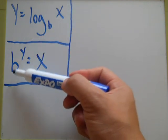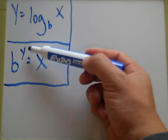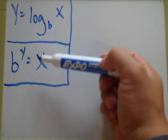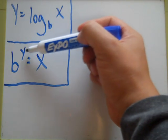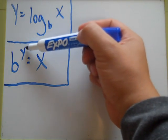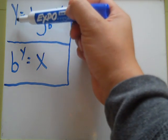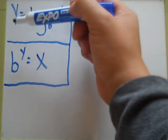So this means base with an exponential y, exponent y equals x. Now, as you can see in exponential form, the y is the exponent. It is the exponent here as well, it's just written differently.